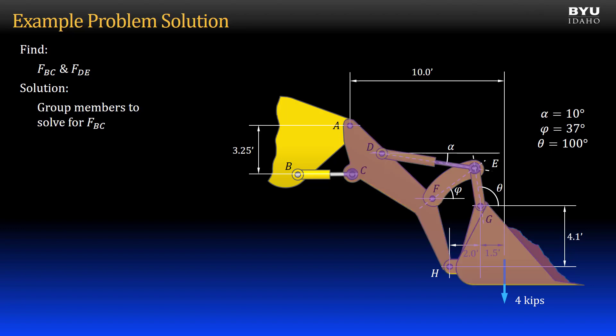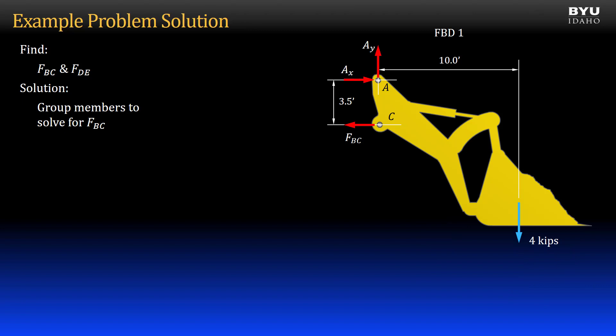We can group all the members into one free body diagram and solve for all three forces, which includes the force in ram BC. Here is free body diagram 1 with one known force and three unknown forces. By summing moments at A, I can solve for the force in the two-force member BC. I get negative 12.31 kips or 12.31 kips in compression.